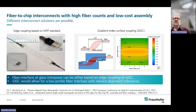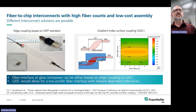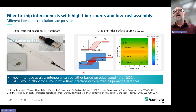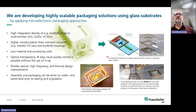We also need fiber-to-chip interconnects with high fiber counts and low cost. Here you can see glass substrates with waveguides applied with fiber arrays on the MTP standard. I have already mentioned the graded-index surface coupling (GISC) principle — using ion exchange waveguides in a special configuration to couple light out and into the waveguide — which can then be fiber coupled. We use this for highly scalable packaging solutions.